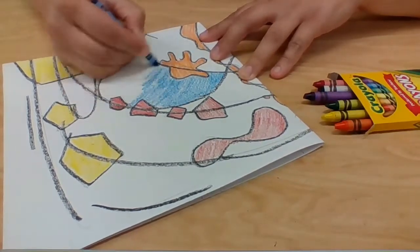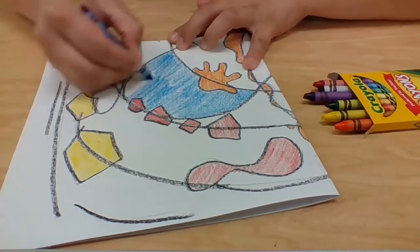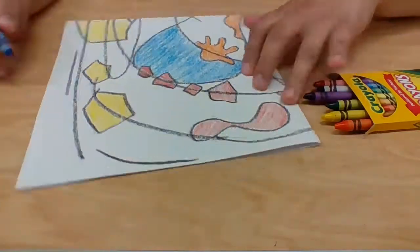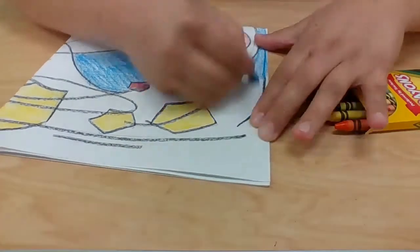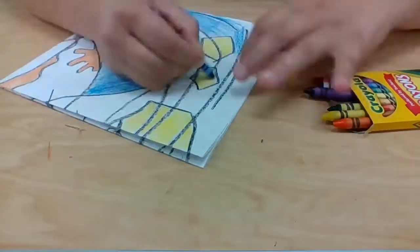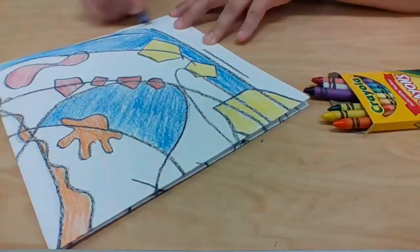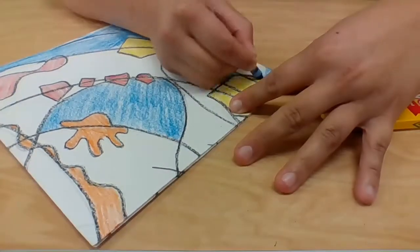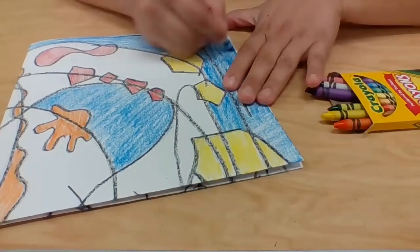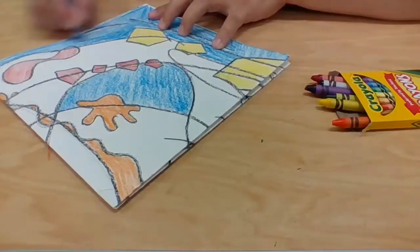As I'm working, you'll notice that I'm turning my paper a lot. That's because sometimes it can be hard for my hands to reach different parts of the paper or it might get a little bit uncomfortable as I'm trying to color. So if I move the paper to where my hand feels most comfortable, it's a little bit easier for me to color.